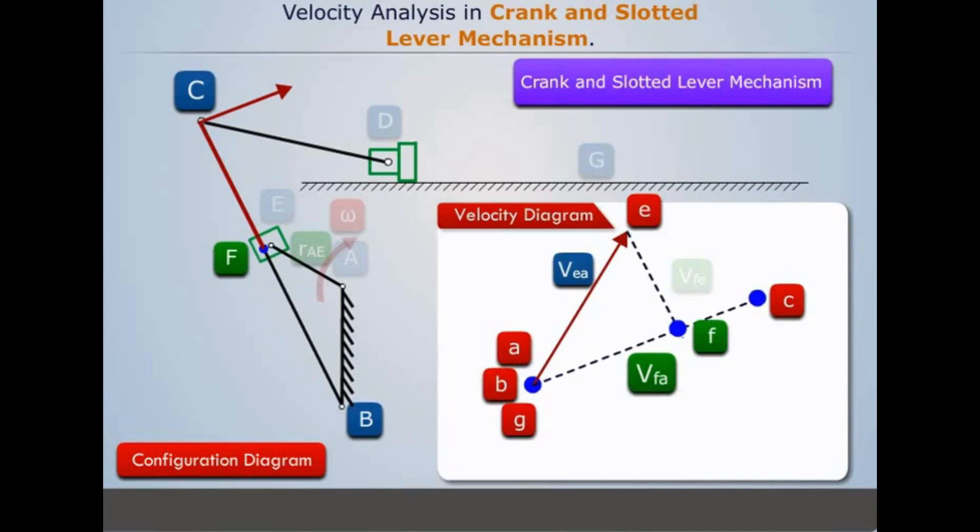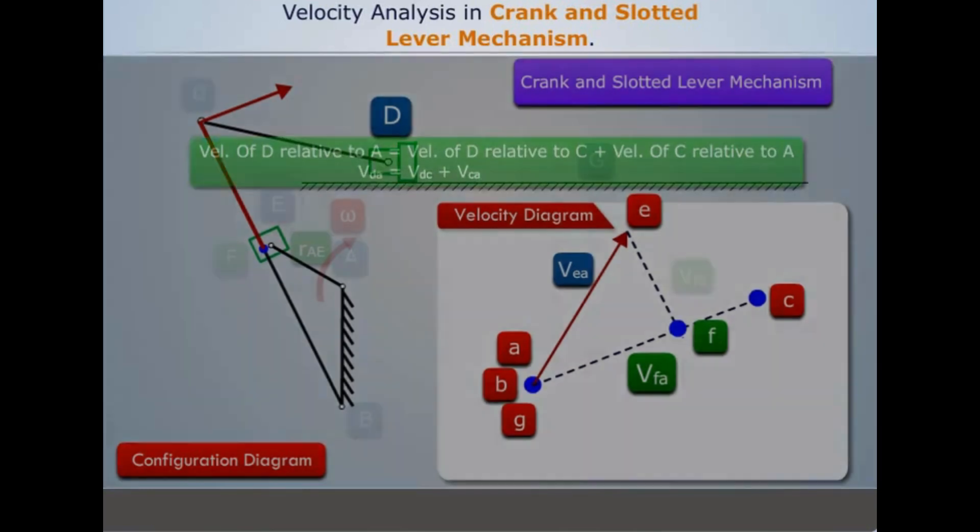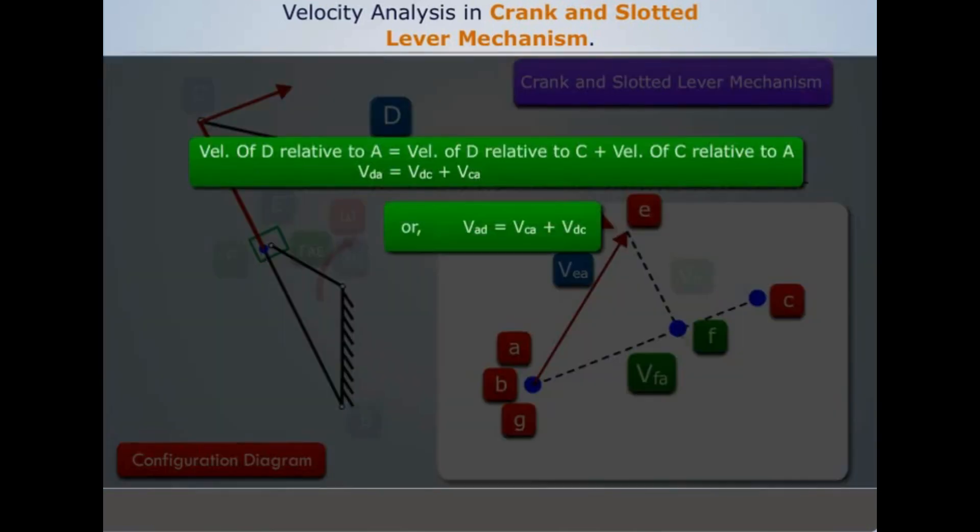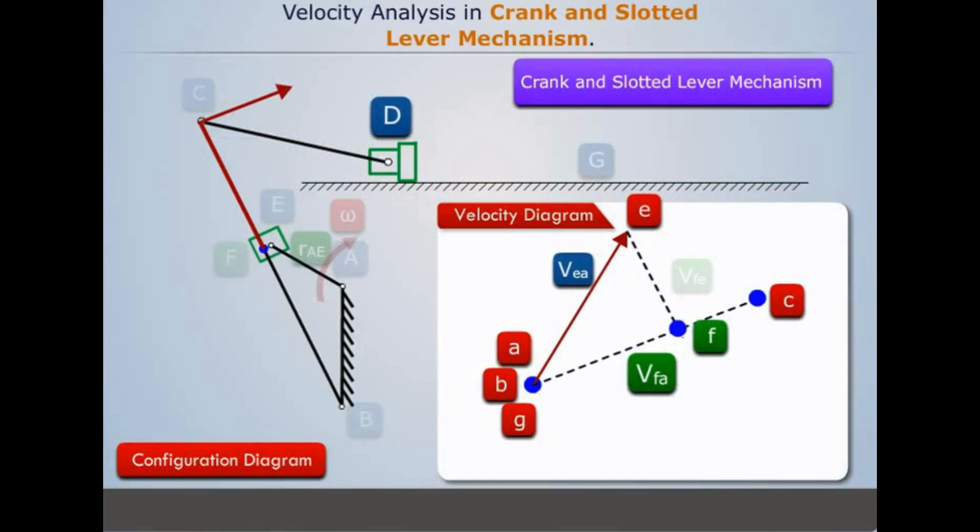Now let's try to find the velocity of RAM D. Velocity vector VCD will be in the direction perpendicular to link CD. So we draw a line from point C in the velocity diagram in the direction perpendicular to link CD, and another line parallel to the motion of the RAM D. The point of intersection of these two lines will give us the location of point D.